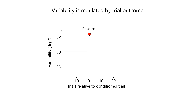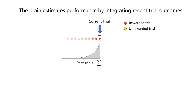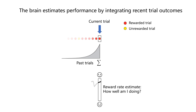We found that when animals are rewarded on a trial, their variability in subsequent trials drops significantly. When the animal is not rewarded, variability increases. The effect of a single trial decays with a time constant of about five trials, meaning that the rats are estimating how well they're doing by integrating recent trial outcomes in an exponentially weighted manner.